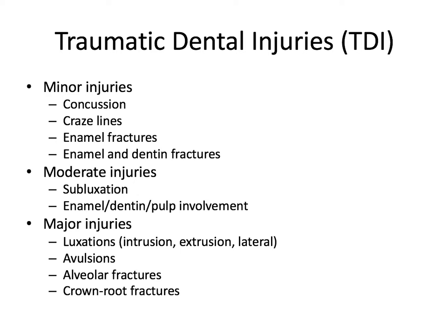Next, we have moderate injuries, which involve subluxations and enamel, dentin, and pulp fractures — fractures that are more complicated and involve the nerve of the tooth. These are our Ellis class 3 and class 4 fractures. Moderate injuries introduce a higher cost and more complex intervention. Typically endodontic treatment is involved, like a pulpotomy, full pulpotomy, or even a pulpectomy. They have a more guarded prognosis and require longer-term follow-up.